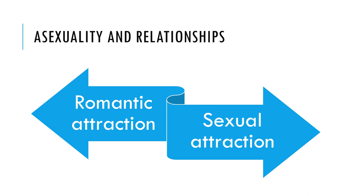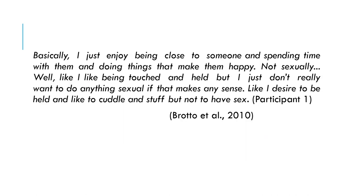Asexual people teach us that romantic attraction and sexual attraction are two distinct and independent forms of connection and bonding, although most sexual people and some sex therapists tend to assume that romantic relationships must include sex. Asexual people are not necessarily aromantic. Around one-third of asexual people are in long-term relationships and 70% had reported ever previously being in relationships, as suggested by Brotto and colleagues in 2010. In the words of one participant: 'I just enjoy being close to someone and spending time with them... I like being touched and held, but I just don't really want to do anything sexual. I desire to be held, I like to cuddle, but not to have sex.'